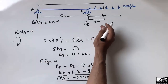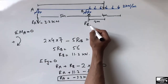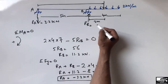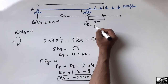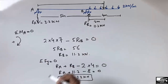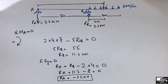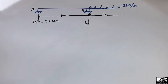So RA = 3.2 kilonewton acting downward, and RB = 11.2 kilonewton acting upward. These are the support reactions for the given loading. Now I will draw the shear force and bending moment diagram from these reactions.